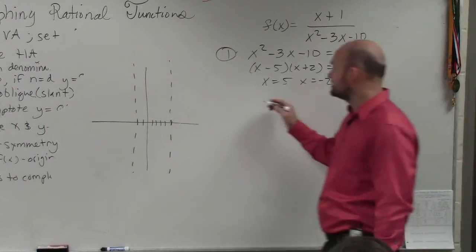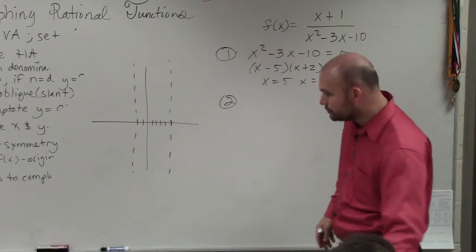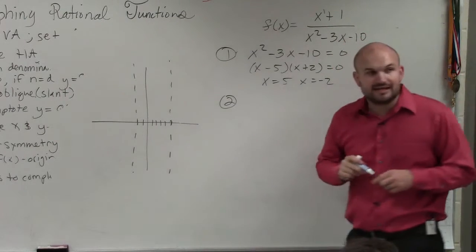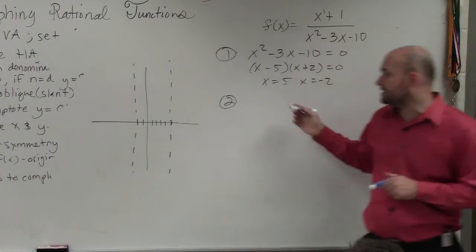The next thing, horizontal asymptote. All you need to do in the horizontal asymptote is compare the degrees of your numerator and your denominator. You can see, please write this down. Do not put your stuff away. You can see that the degree in the denominator...